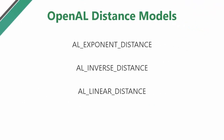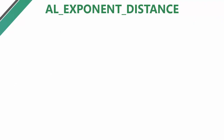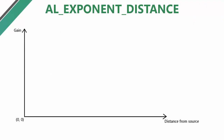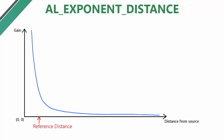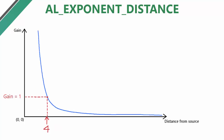So I'm now going to go through each of these three distance models and explain how they work and how the different variables affect them. We'll start off with the exponential distance attenuation model, which causes the gain of the source to decrease exponentially as you move away from it. The reference distance variable determines at which distance from the source the gain will be exactly 1, and this is actually the case for all of the distance models. So if you use a reference distance of 4, then at a distance of 4 away from the source the gain will be 1.